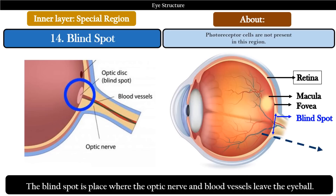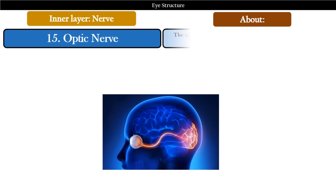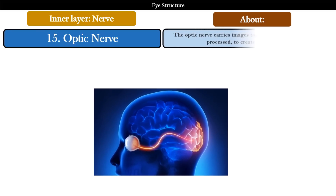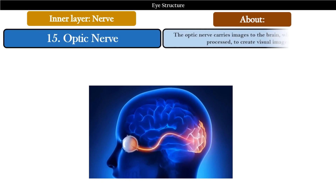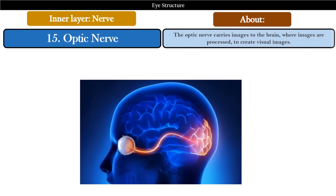The last important part of the eye is the optic nerve. The optic nerve carries images to the brain, where images are processed to create visual images.